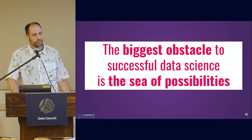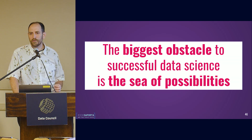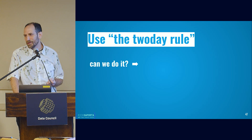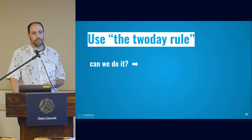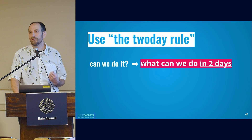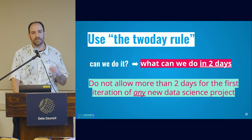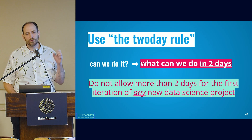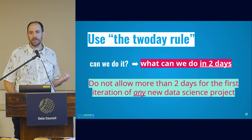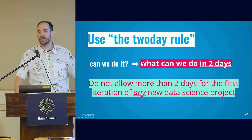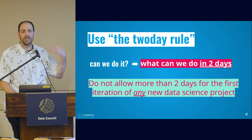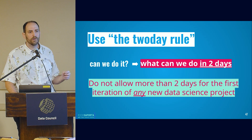As far as data science — the biggest obstacle is the sea of possibilities. You can do absolutely anything with it, and that will actually kill it. So I've implemented what I call the two-day rule: move away from 'can we do it?' to 'what can we do in two days?' Any single data science project you're starting for the first time, absolutely time-box it to as small a time as possible — for me that's two days. Nothing should be planned to take longer. Second and third iterations can take a month or two, but the first time: two days only.